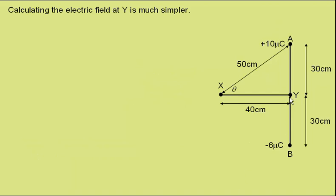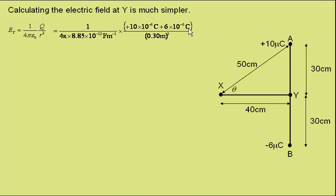Calculating the electric field at point Y is much simpler, as it's between the two charges, so there is no horizontal component from either. The charge at A produces a field acting down, and the charge at B, being negative, also produces a field acting down, so the two add together. The separation from each charge is now 0.3 metres. This gives an electric field strength at Y of 1.6 times 10 to the 6 newtons per coulomb, acting downwards.